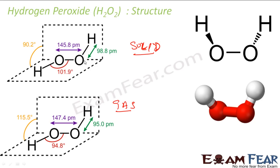We see three dimensions in two different planes. This is the angle — they have two different angles. This one is 101.9 degrees and this one is 145.8 degrees for solid. This is 147.4 picometres for gas.